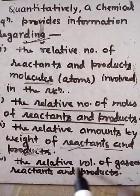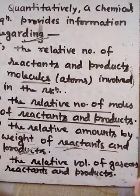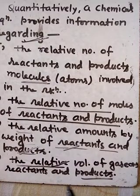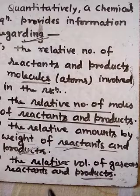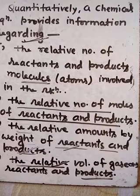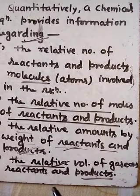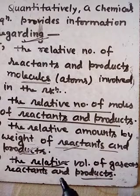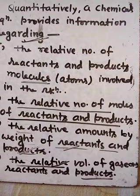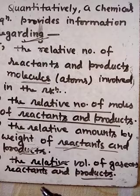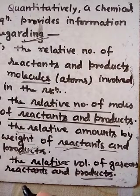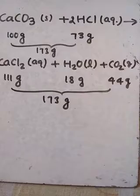Next, the relative volume of gaseous reactants and products. According to the significance of a chemical equation, this point tells us what volume of a gas reacts with another to form a new volume of gas after a chemical reaction. We will see all these points with an example.